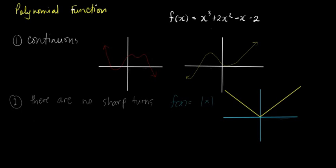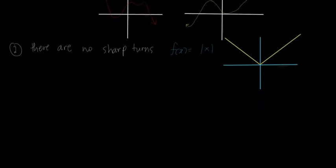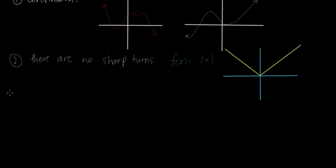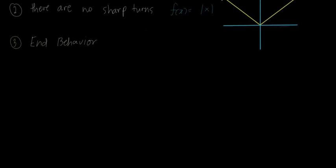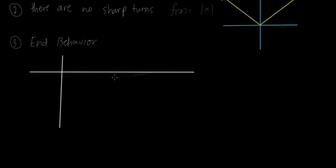The third one that we need to consider is the end behavior. Let's talk about the end behavior. Saan papunta yung graph mo towards positive infinity? Saan papunta yung graph mo towards negative infinity? Let's make a table for this. Pagawa tayo ng table ng end behavior. The things we consider for the end behavior are the degree of the polynomial.